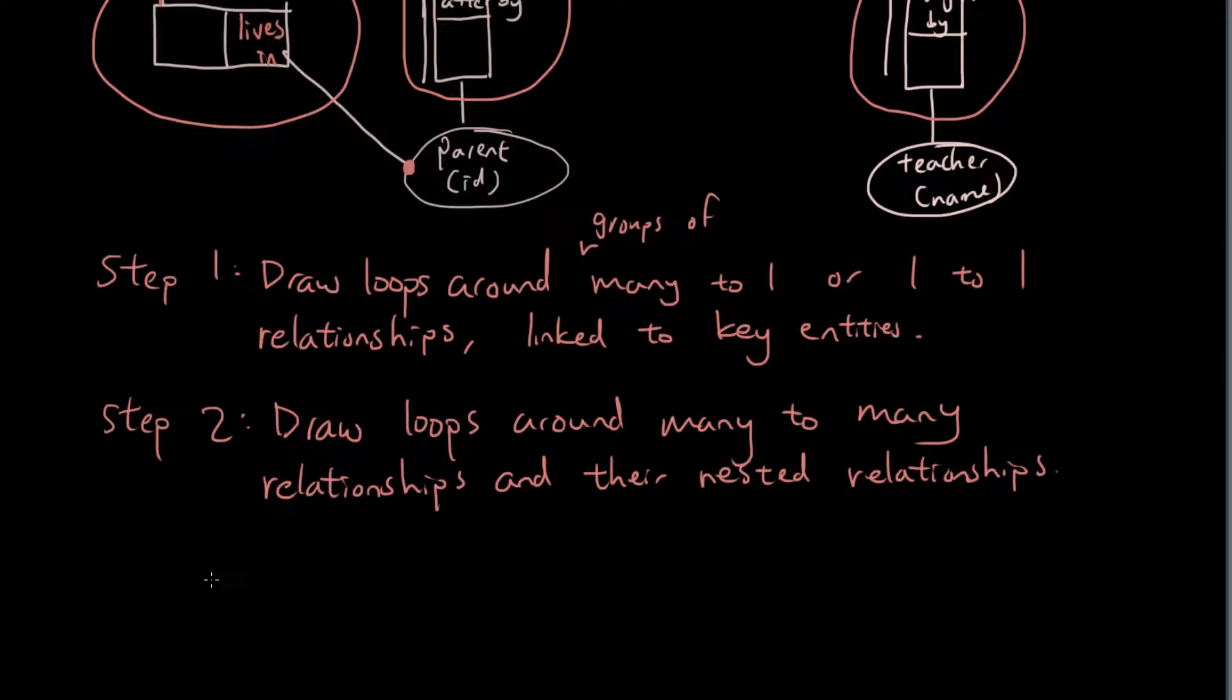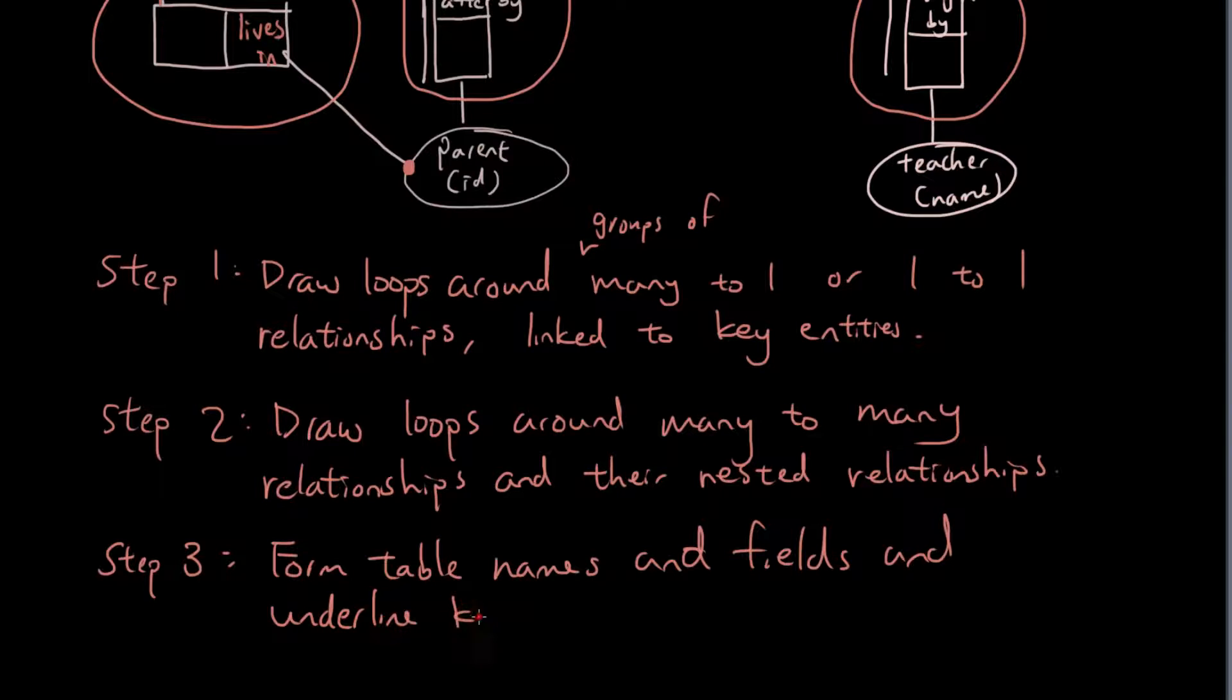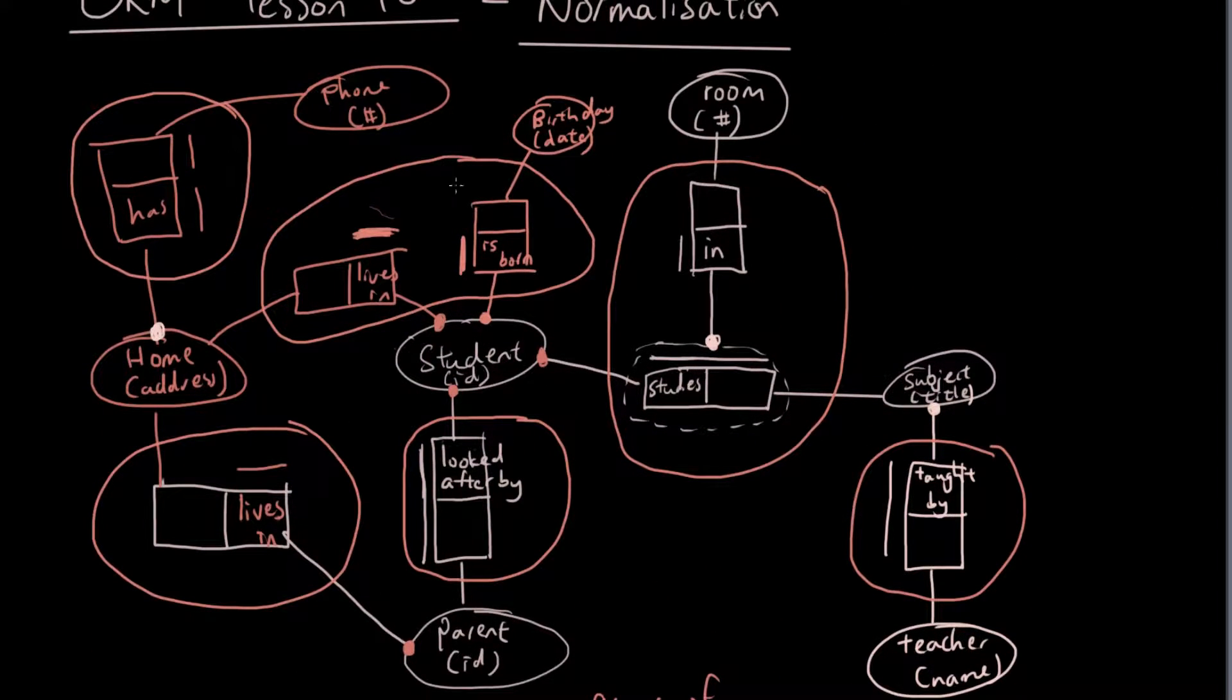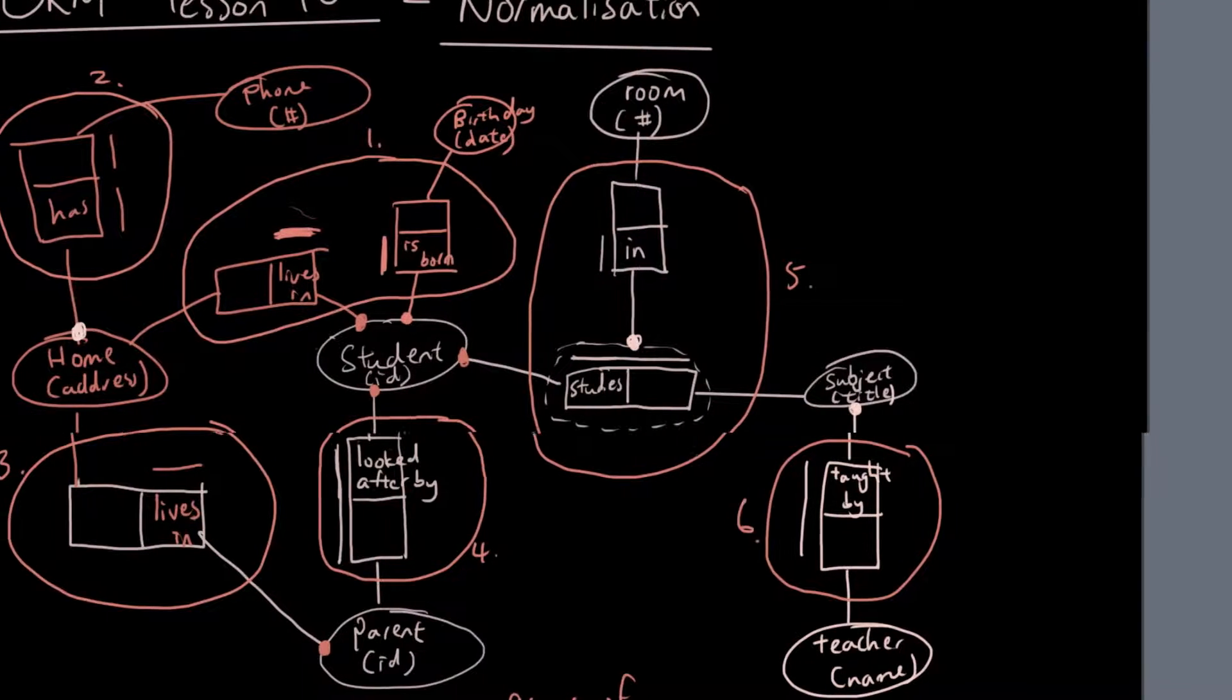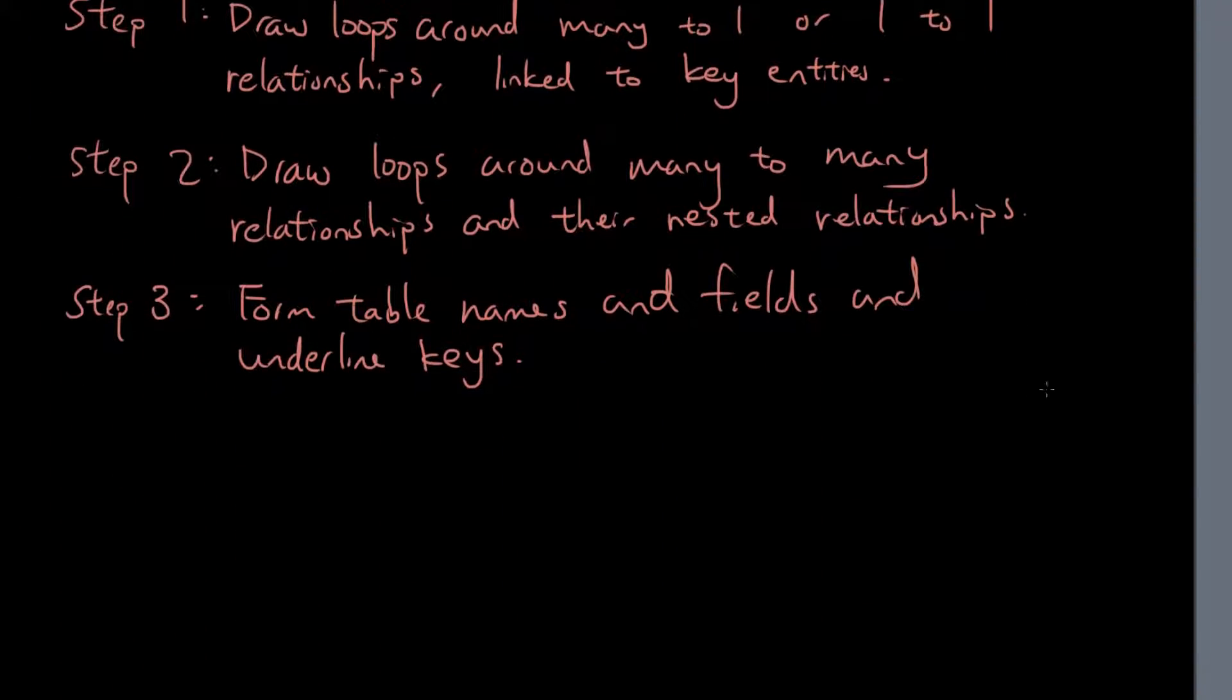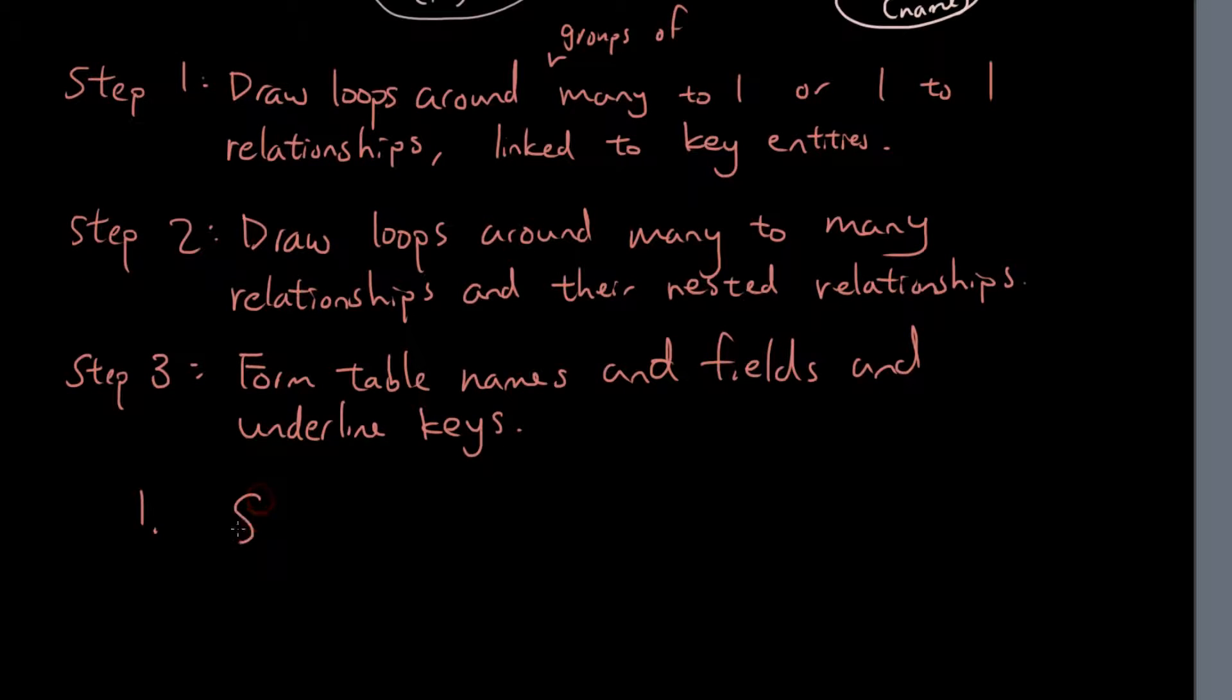So now step three is going to be form table names and fields and underline keys. So what tables do we have? I'm just going to number it. I'm just going to say this is one, two, three, four, five, six, so I don't forget. So let's do table one. I'm going to name the table student.